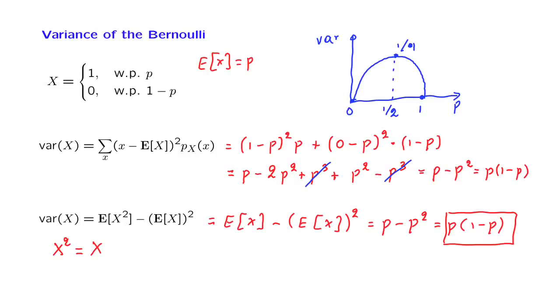In some sense, the variance is a measure of the amount of uncertainty in a random variable, a measure of the amount of randomness. A coin is most random if it is fair, that is, when p is equal to 1 half. And in this case, the variance confirms this intuition. The variance of a coin flip is biggest if that coin is fair.